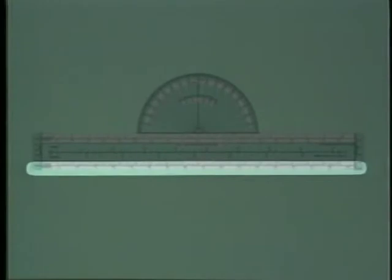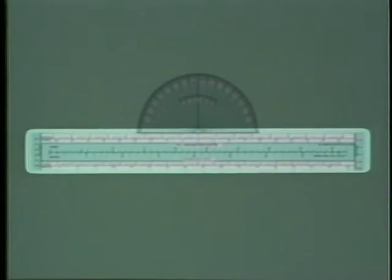To find the true course, you'll use a navigation plotter similar to this one. It has three basic components: a straight edge to draw the course line, a protractor to determine the direction of the course, and mileage scales to measure distance. To help demonstrate the use of the plotter, we'll use this simplified rendition of a sectional chart. The departure airport in this example is McGee, and the destination is Waynesboro.